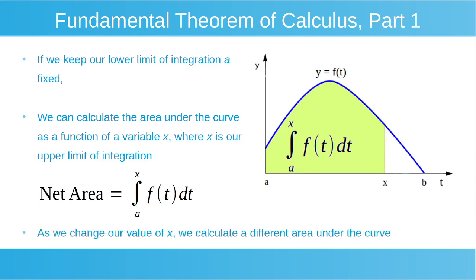As we change our value of x, we calculate a different area under the curve. So if we reduce our value of x, as shown on our plot, we reduce our value of x to a new position. If we calculate our area now as the integral from a to x of f dt, it gives us the area shaded in green for that new value of x.